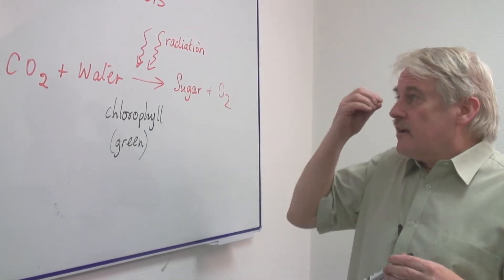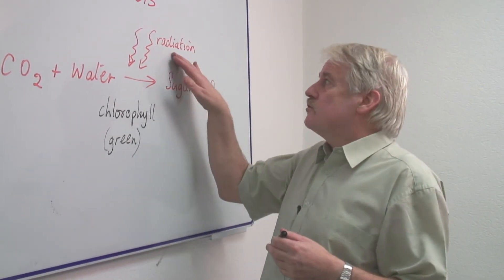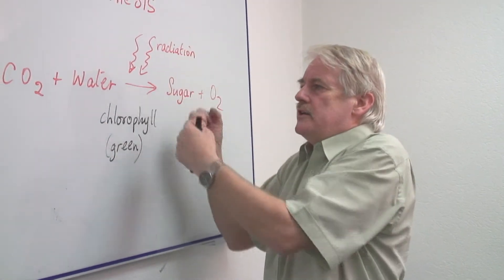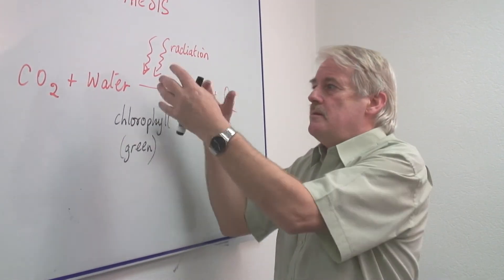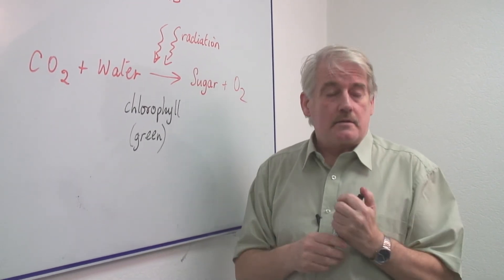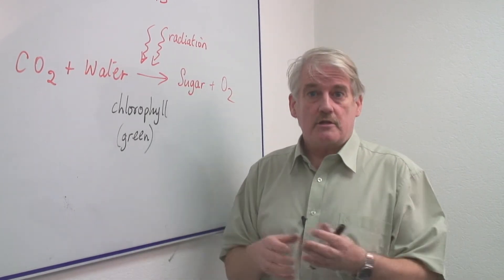So the whole point about photosynthesis is we are using radiation from the sun, the sun's energy, and we're harnessing that energy in plants to create food which we can eat. So we can eat this sugar and we can grow as a result.